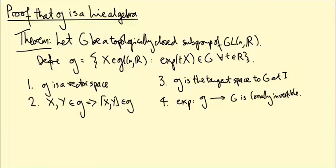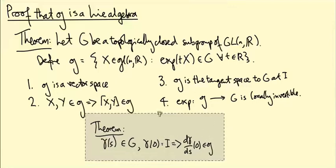We're going to start the proof of the theorem stated earlier: if G is a topologically closed group of matrices and little g is the set of matrices X such that exp(tX) is in G for all t, then little g has nice properties. Little g is a vector space, a subspace of gl(n,R); the commutator bracket [X,Y] is in little g; it's the tangent space to G at the identity; and the exponential map is locally invertible. Property three was proved in the last video, four will come next video, and today we focus on one and two, using three.